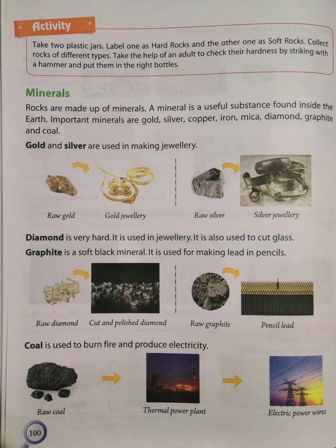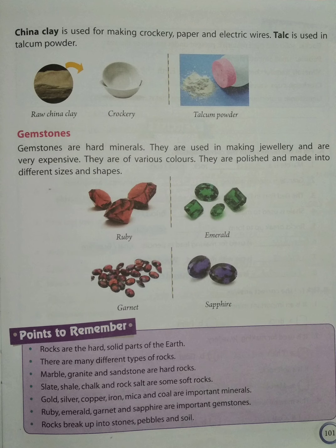China clay. It is used for making crockery, paper, and electrical goods. And talc is used in talcum powder.